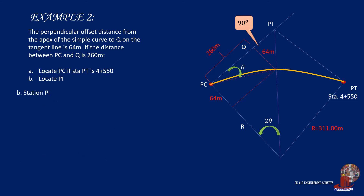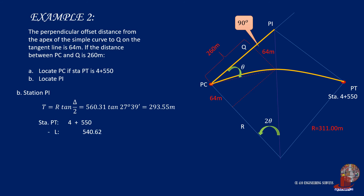Let's determine station PI next. With PT and PC already known, solve for tangent distance T to reach station PI. Using the formula T equals R times tangent of delta over 2, the tangent distance is computed as 293.55 meters. Starting from station PT of 4 plus 550, subtract L of 540.62 meters to get station PC of 4 plus 9.38 meters, then add the back tangent distance of 293.55 meters to get station PI of 4 plus 302.93 meters.